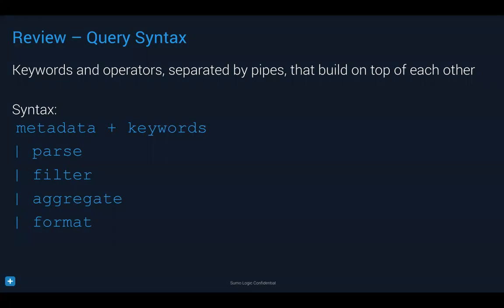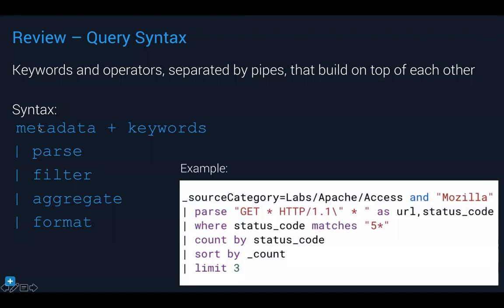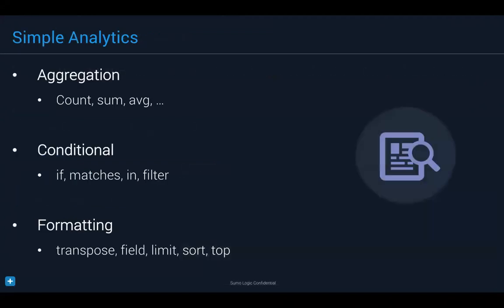We also talked about simple analytics — the ability to create parse statements, use metadata and keywords, filter, and aggregate. For example: grab Apache access data with 'Mozilla', parse out URL and status code, filter where status code matches '5xx' for server errors, count by status codes, sort, and limit to top three. Simple analytics are the basic operators: count, sum, average, min, max, if, matches, in, transpose, field limit — all for formatting and summarizing your results.